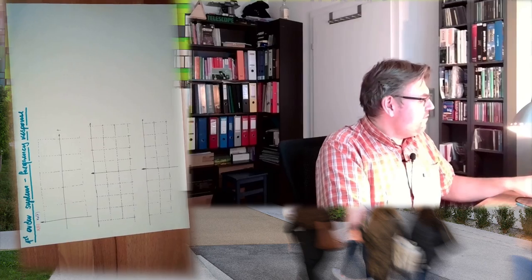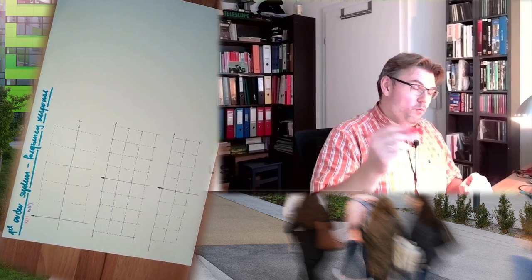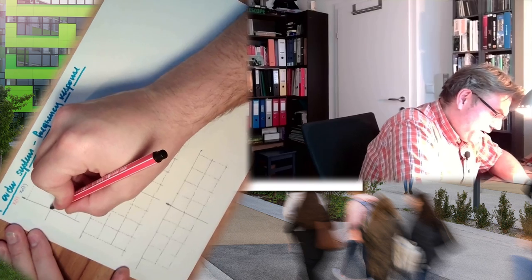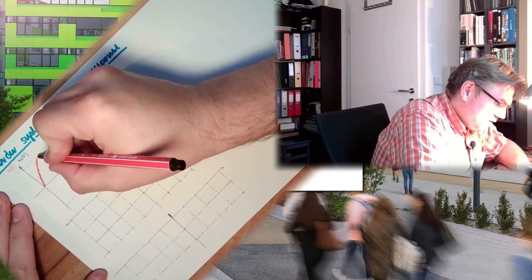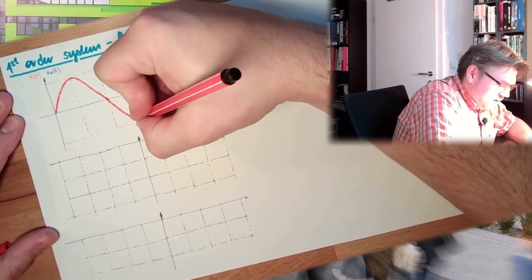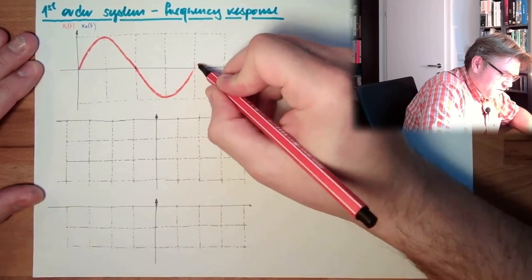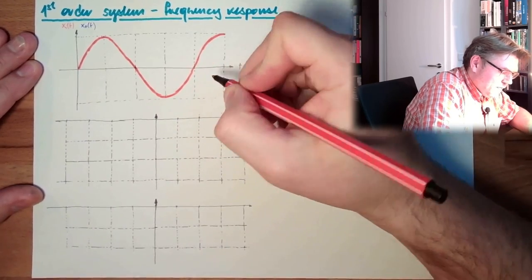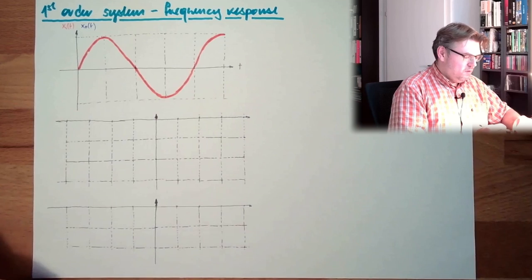Today we just want to have a look at this frequency response. So what is a frequency response? You have again an input and an output in the measurement. The input is the physical quantity and the output is the displayed value. And if the physical quantity is changing like a sine wave, this is the input with a certain frequency.